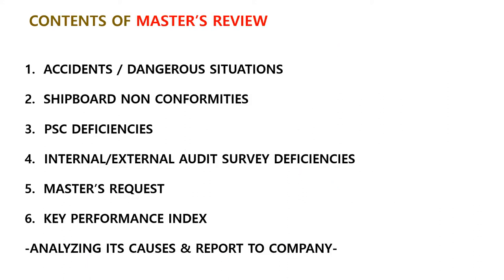Next are the contents of the master's review. This master's review should include the following items. Number 1: Accidents and dangerous situations. During the last one year, how many accidents and dangerous situations occurred — these are to be analyzed with causes and reported to the company. Number 2: Shipboard non-conformities. During the last one year, how many non-conformities were identified on board — also analyzed with causes and reported to the company. Number 3: PSC inspections. During the last one year, how many PSC inspections were held and how many deficiencies resulted — also analyzed with causes and reported to the company.